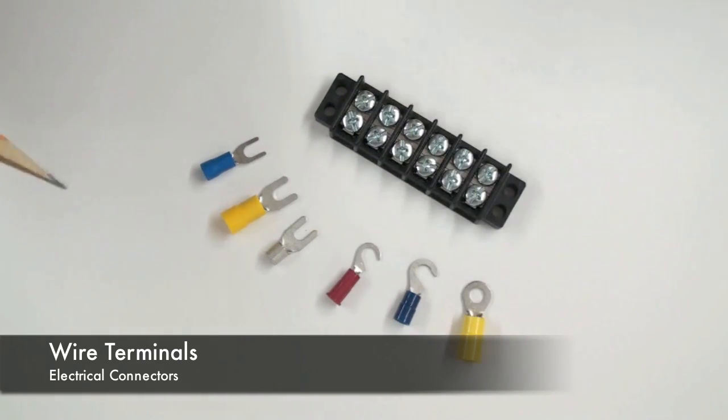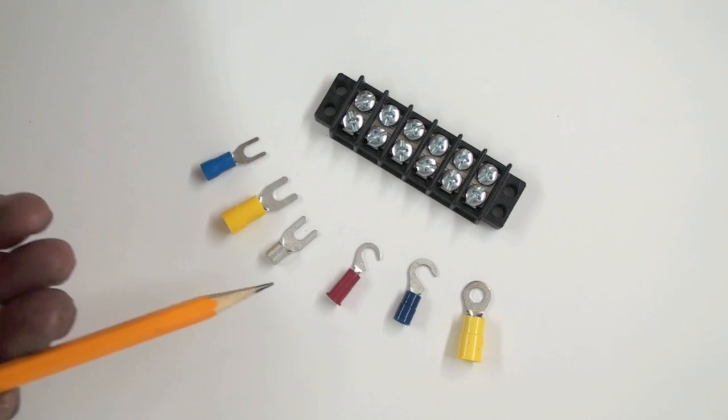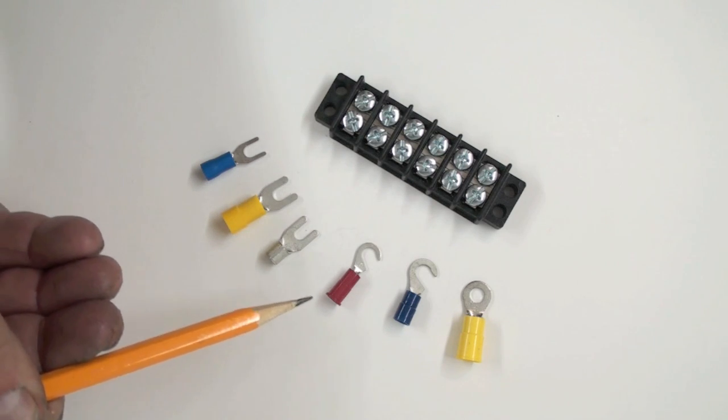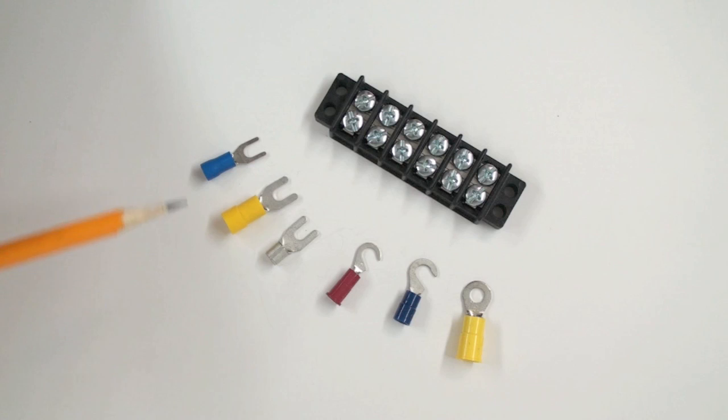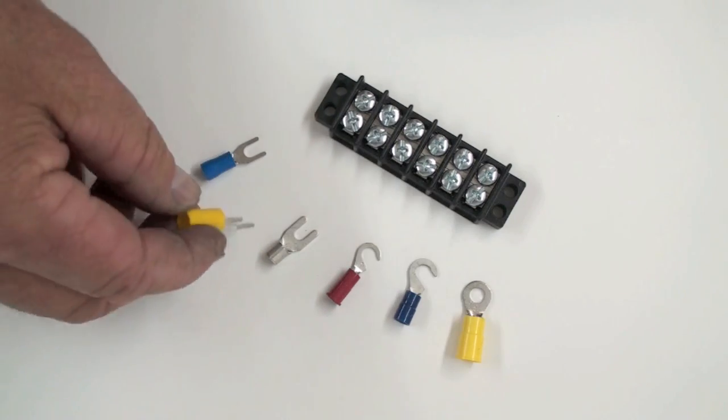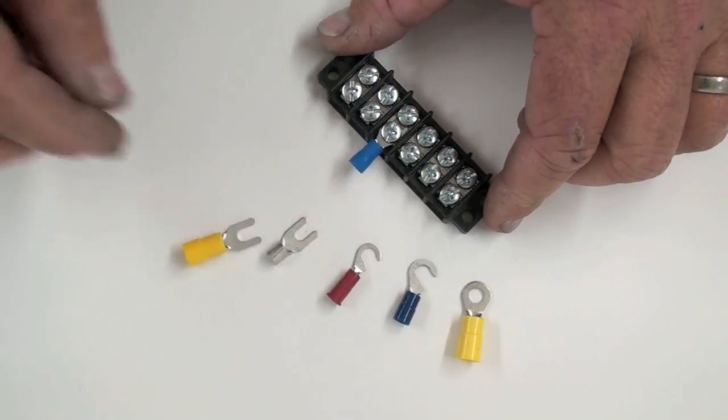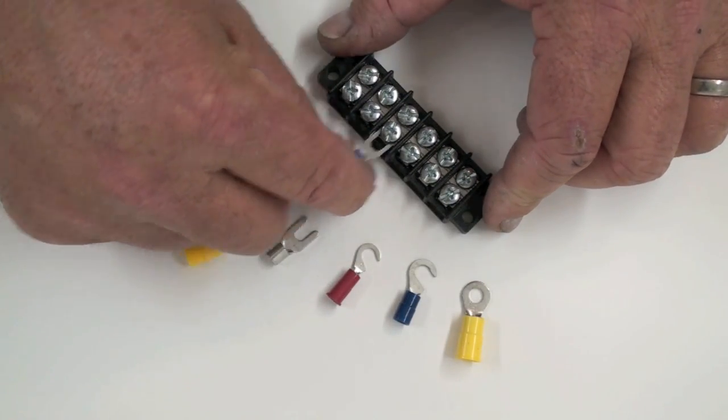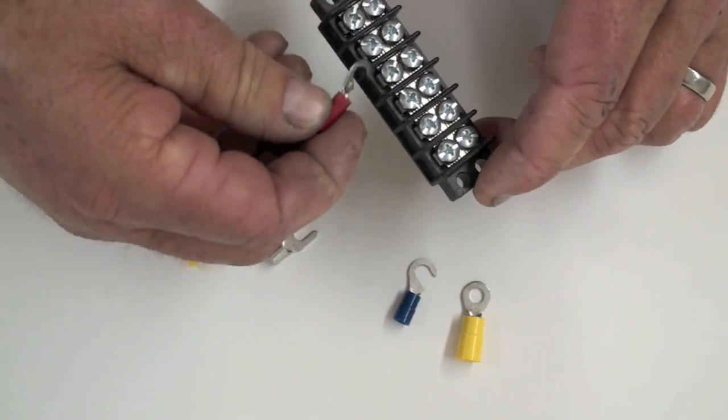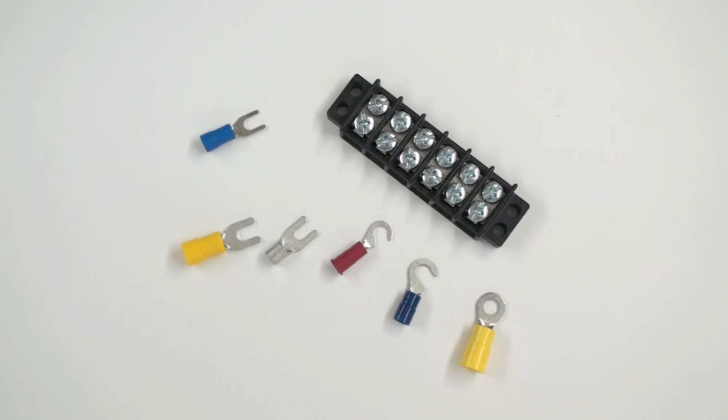This is a terminal strip and you can see the different colors for different size wires. The red is for the smaller size 18 to 22 gauge, the blue is for 14 to 16 gauge, and the yellow will fit 10 to 12 gauge wires. You simply crimp them onto your wire. This type will slide right onto the terminal and provide a fairly good connection. The hook gives you a little bit more strength, and the ring gives you the most stable connection.